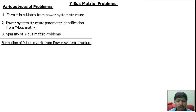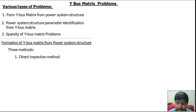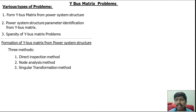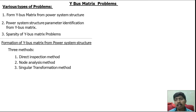In the formation of Ybus matrix there are three methods. The first one is the direct inspection method. The second one is the node analysis method, that is the singular transmission method. The direct inspection method and node analysis method are both the same method, but in the direct inspection method the formulas are used directly to find the Ybus matrix. For some problems we cannot use the direct formulas, so for that case we have to use the node analysis method.